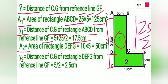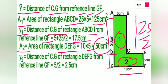Let A2 be the area of rectangle DEFG, which will be equal to the length of flange into the width of flange, which gives us the value of 50 centimeter square. Let Y2 be the distance of CG of rectangle DEFG from reference line GF, which will be equal to 5 divided by 2, giving us the value of 2.5 centimeter.